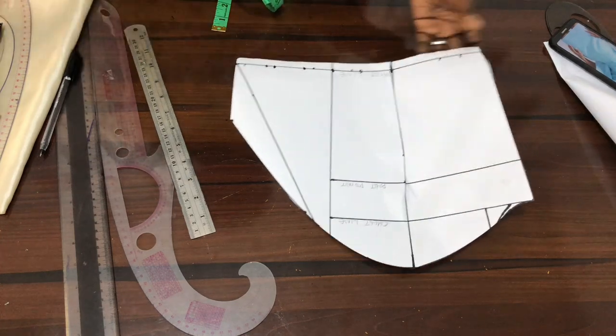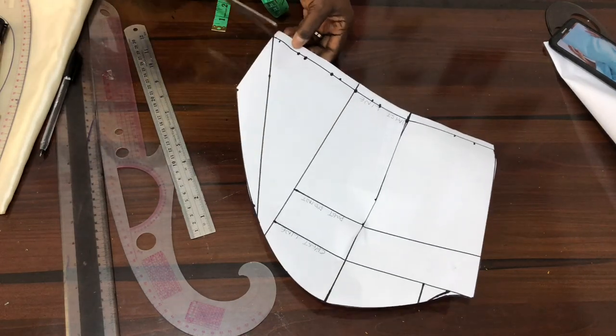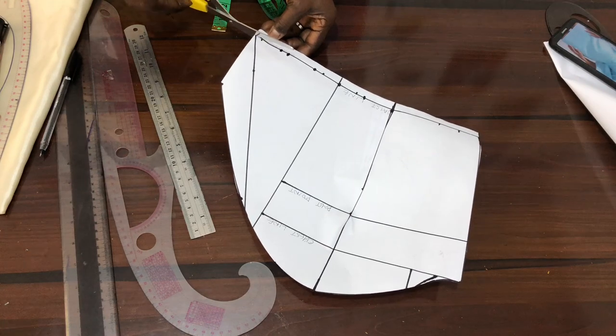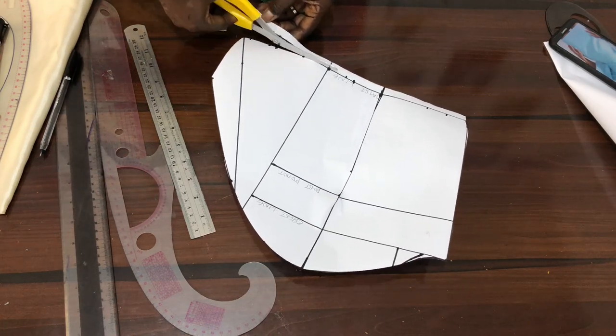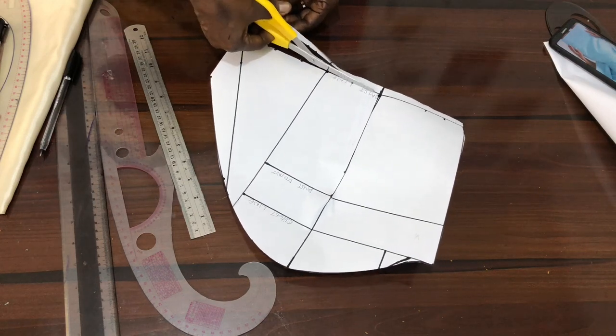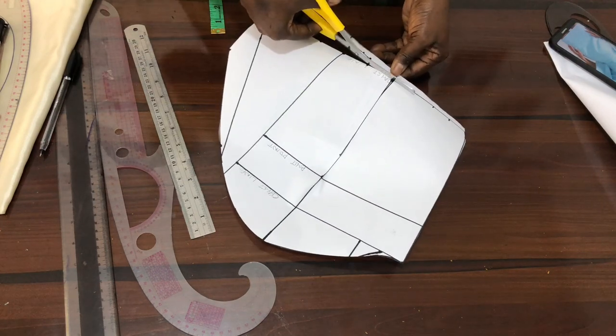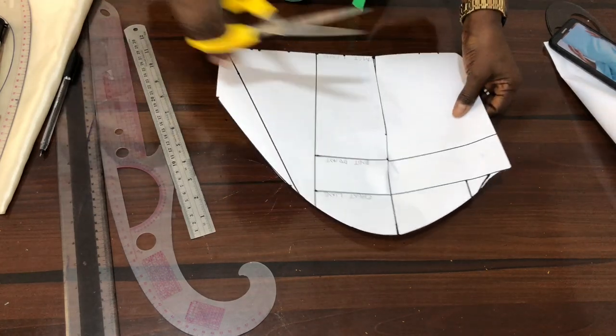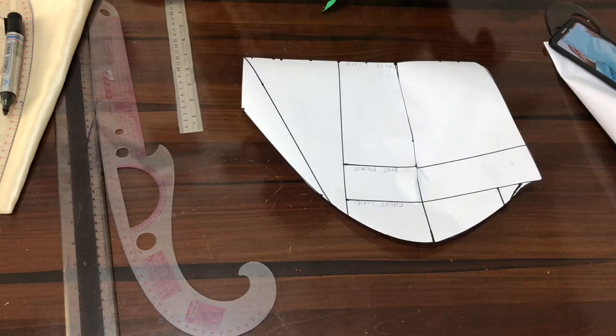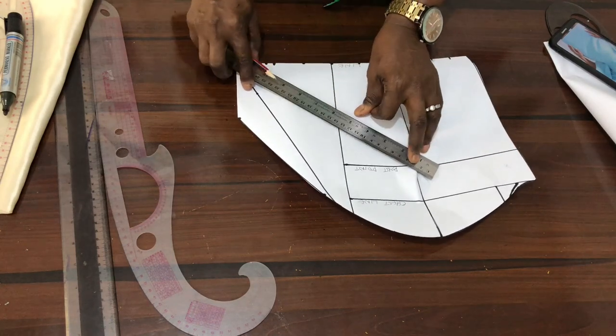So, the first thing I will do is that I will cut off this joining allowance. By the time you have cut out your fabric, just be reminded that you need to add the joining allowance to your bodice. Let me use pencil first to draw out my line.